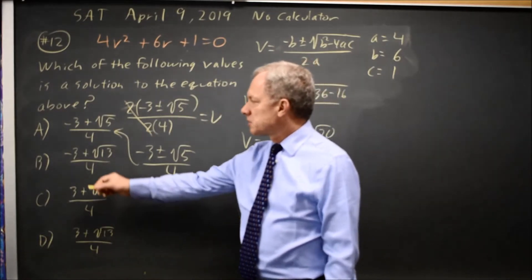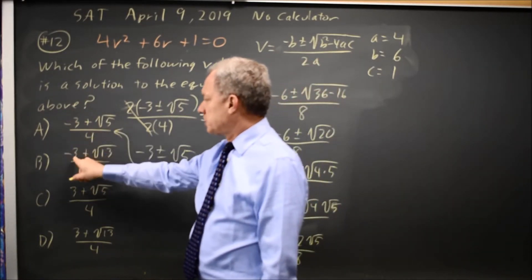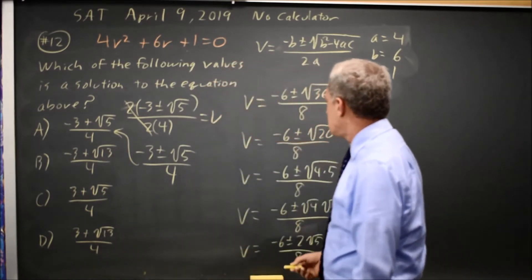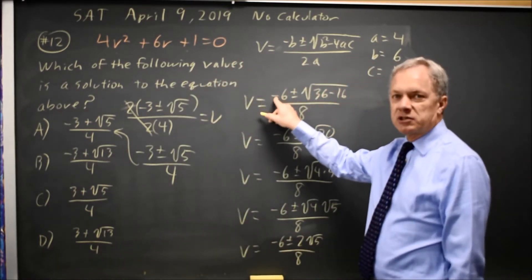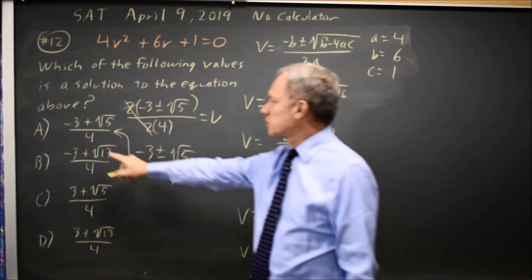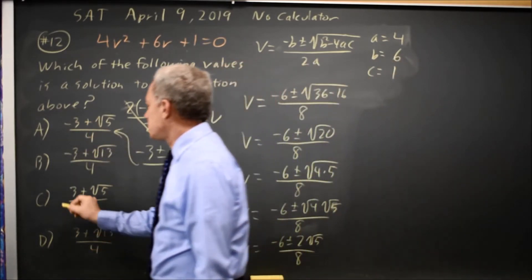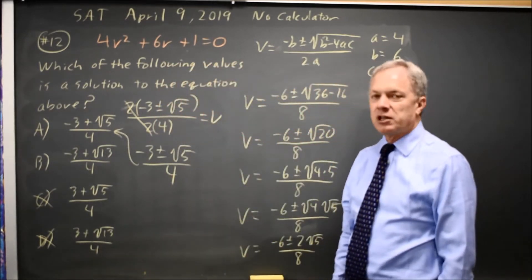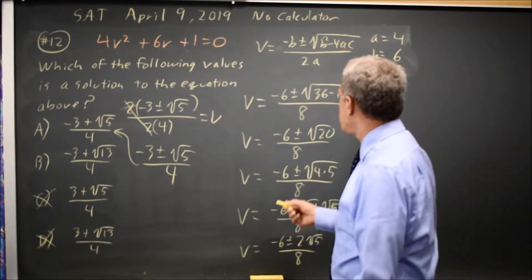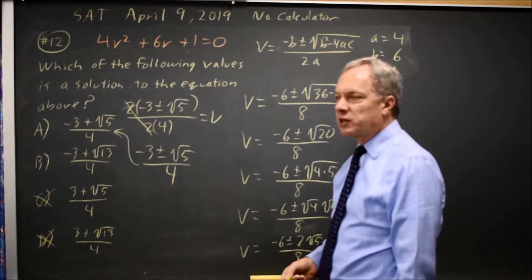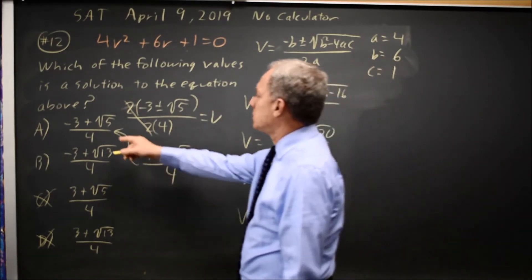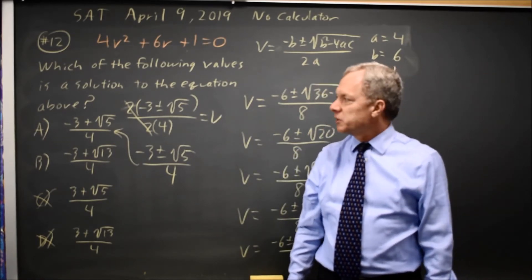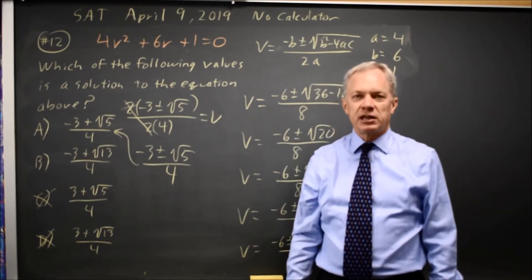Another perspective: the answer choices ask whether the 3 is negative (choices A and B) or positive (choices C and D). Since we started with negative 6 over positive 8, we knew that was negative 3 over positive 4, so we're down to A or B. Then we have either root 5 or root 13 — since 20 is 4 times 5, it simplifies to root 5, so there's no path to a 13. That confirms choice A and not B.